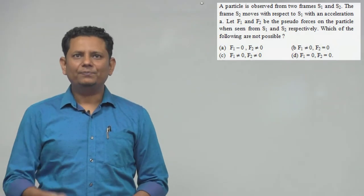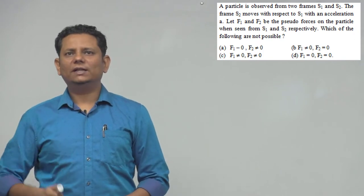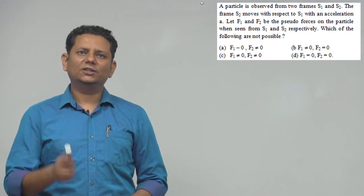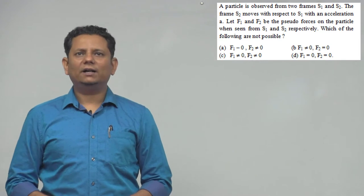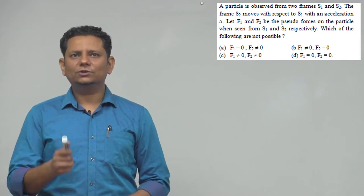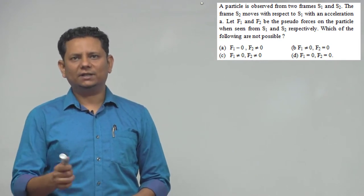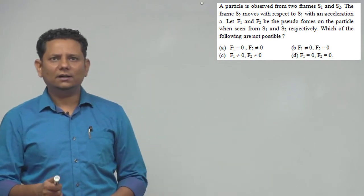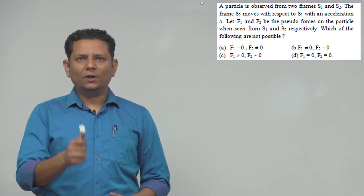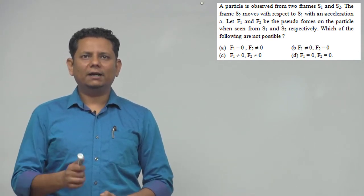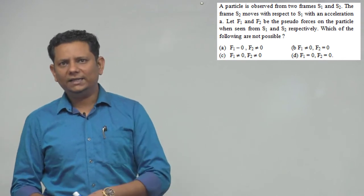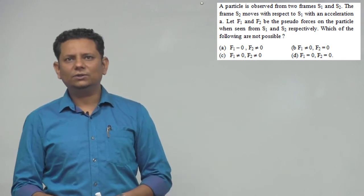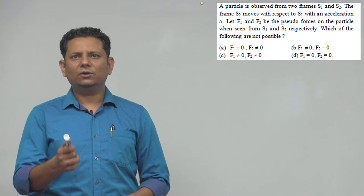Next question: A particle is observed from two frames S1 and S2. The frame S2 moves with respect to S1 with an acceleration a. Let f1 and f2 be the pseudo force on the particle as seen from S1 and S2 respectively. Which of the following are not possible? Option: f1=0, f2≠0; or f1≠0, f2=0; or both non-zero.